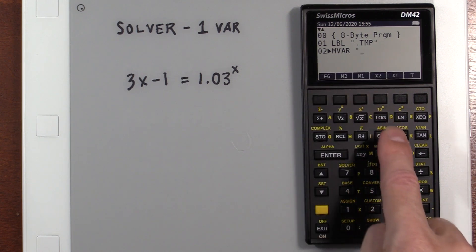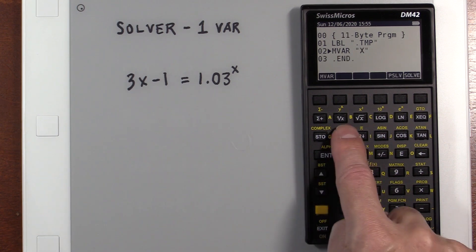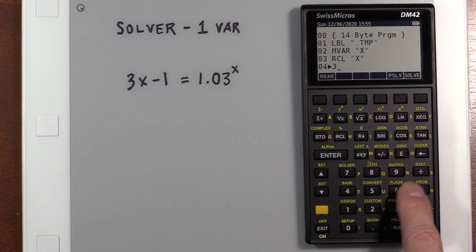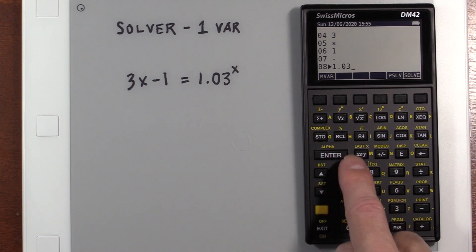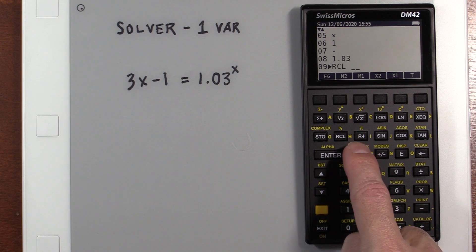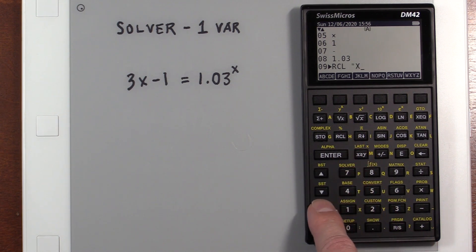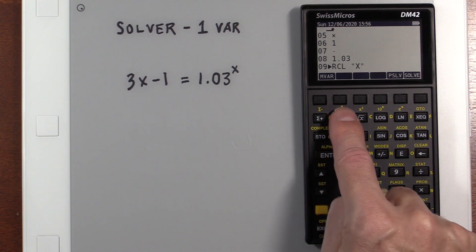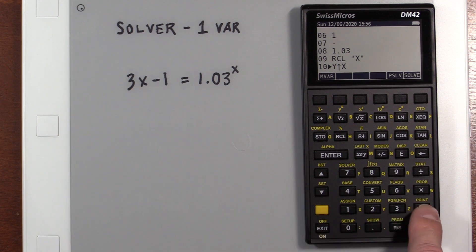So I'm going to declare an X, and then I'm going to enter this. So just like before, we recall the X to the stack, we multiply it, we take a 1 and we subtract it, then we have 1.03 to the X power, so we're going to recall another X. And we're going to do to the, oops, I've got to hit enter, and then to the,